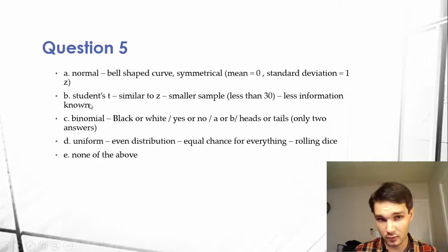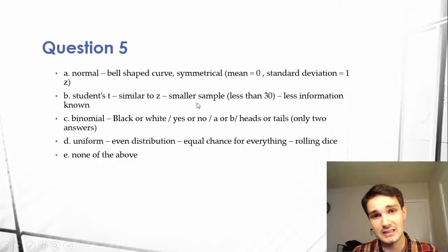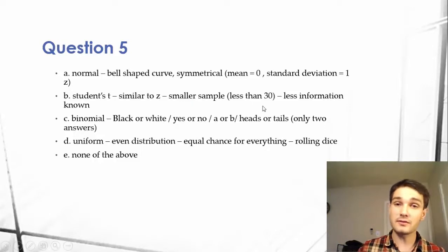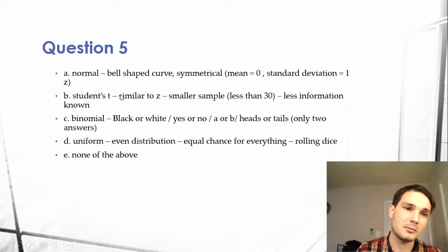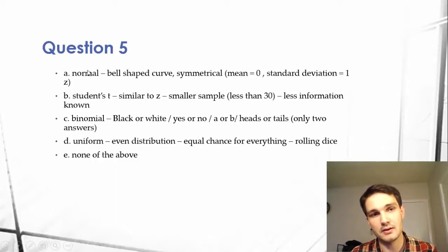A t-score, or the student's t they're using here, which I believe they're trying to get a t-score, similar to a z, generally has a smaller sample size of less than 30. Less information is known about the t, so we know less information about the statistic or population. But it generally is a similar shape and distribution to a z, but it is different.